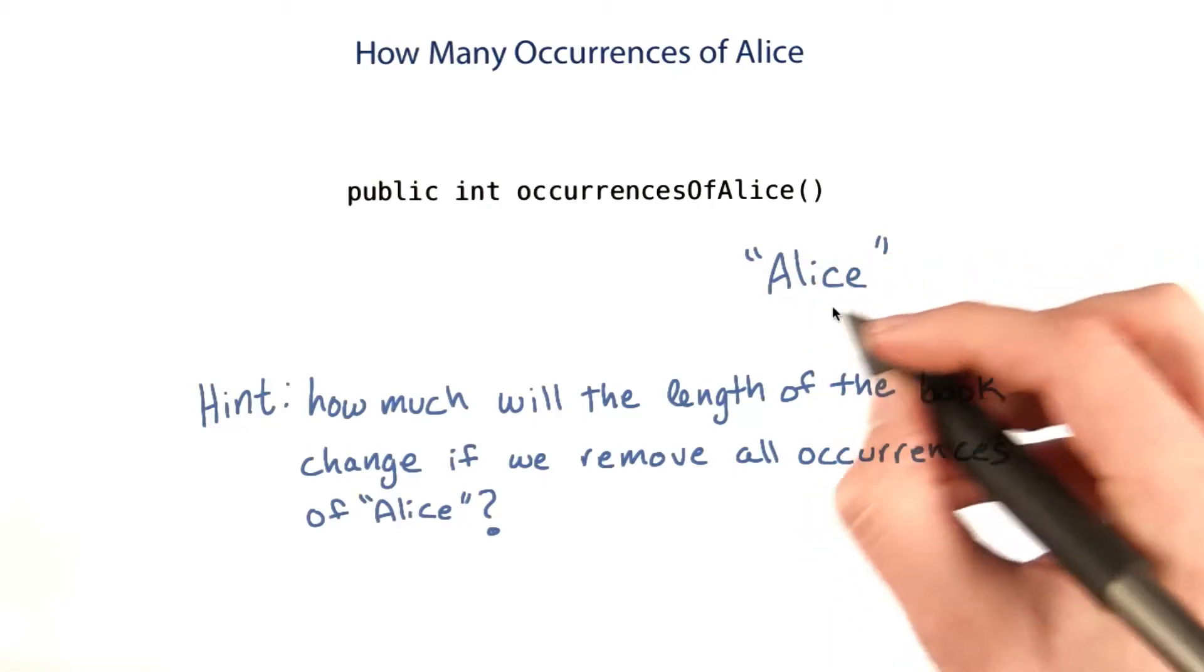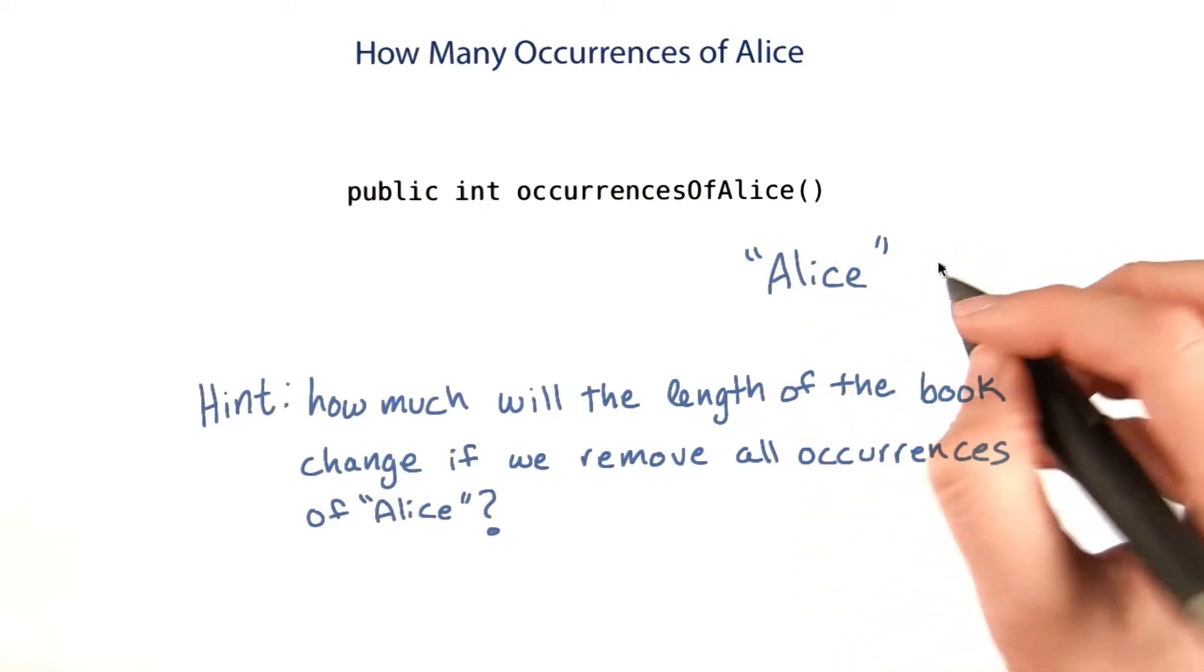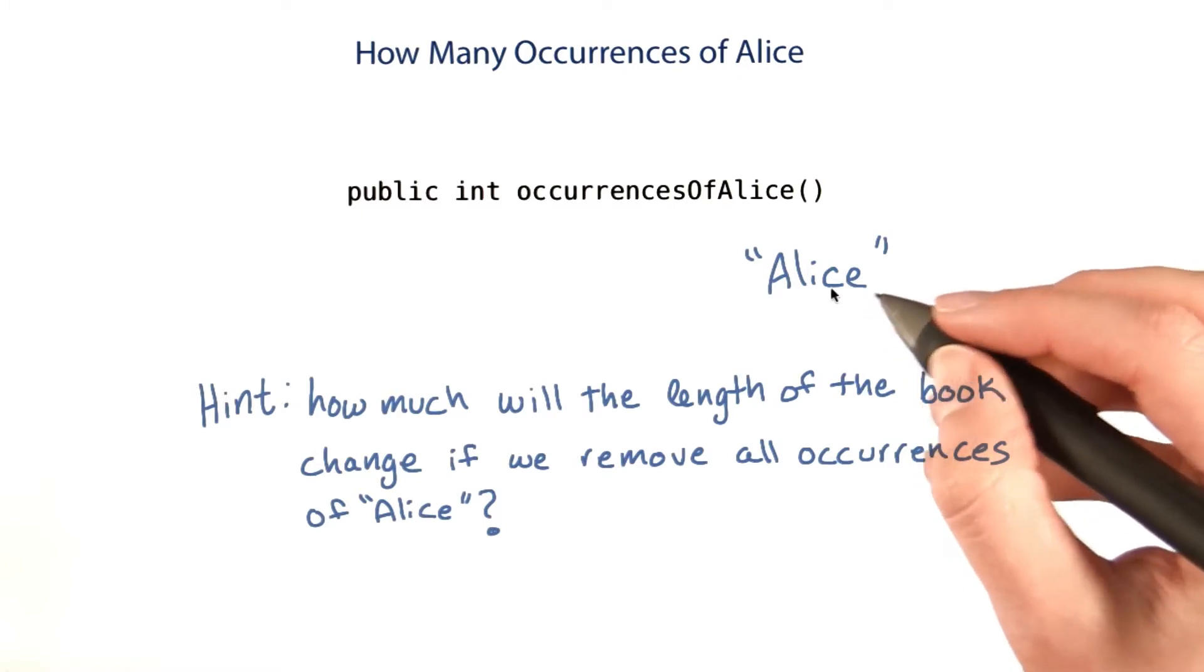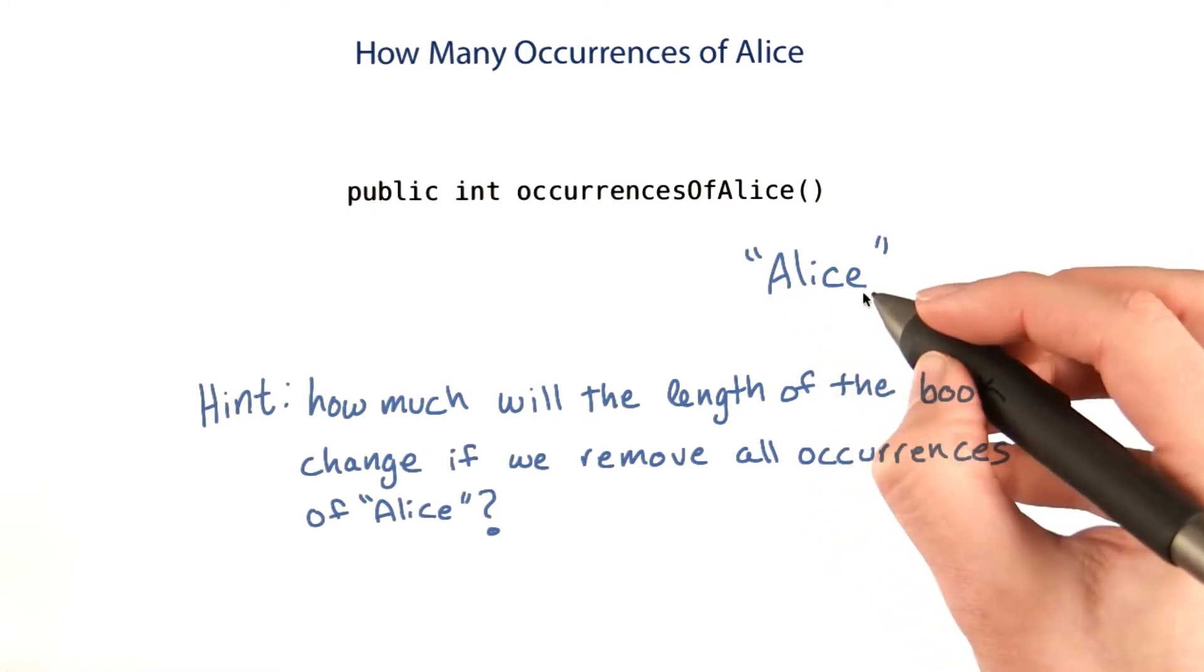If we replace all occurrences of Alice with no letters, then the length of the book will decrease by 5 times the number of occurrences of Alice, because Alice has 5 letters.